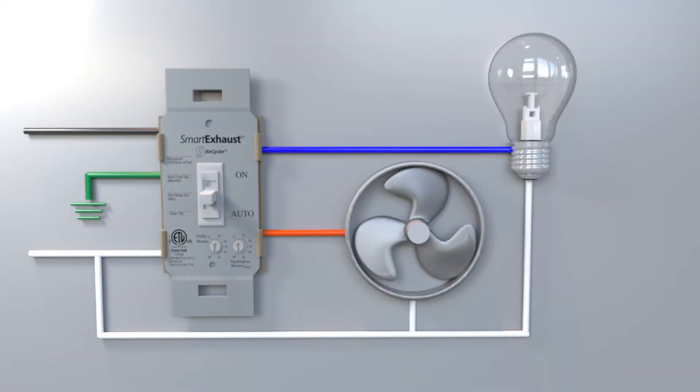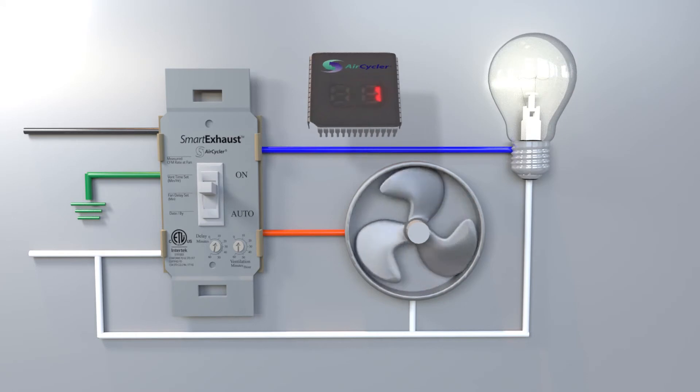Built into the Smart Exhaust is a microprocessor that tracks how much the switch is used each hour. Every minute of normal everyday use of the exhaust fan is counted toward the set ventilation time, meaning no energy is wasted in achieving adequate ventilation for the home. If an occupant enters the bathroom and turns the switch on for 10 minutes, and there is a delay of 10 minutes, that time is credited toward the preset ventilation time.